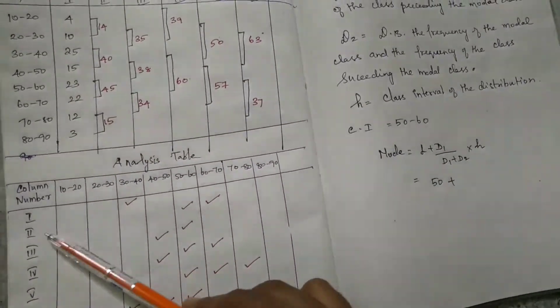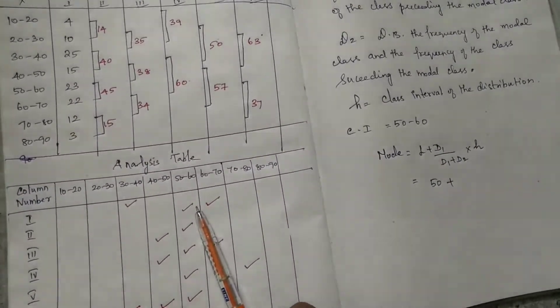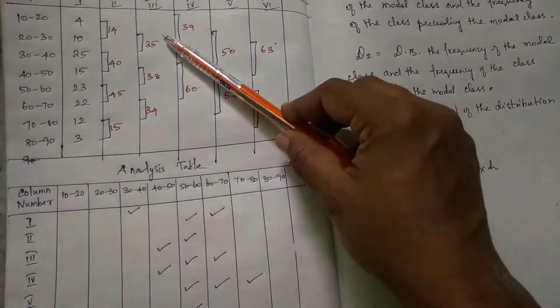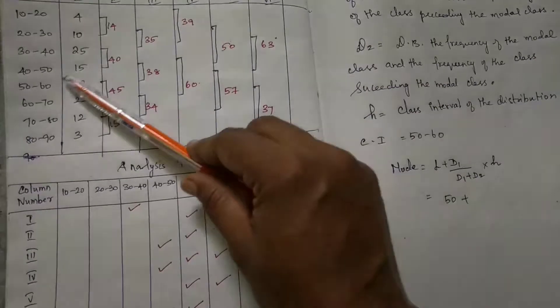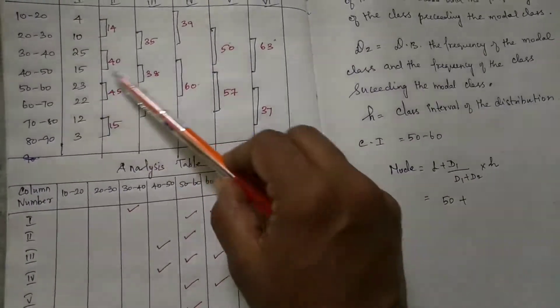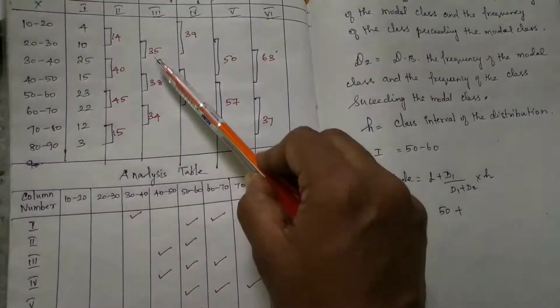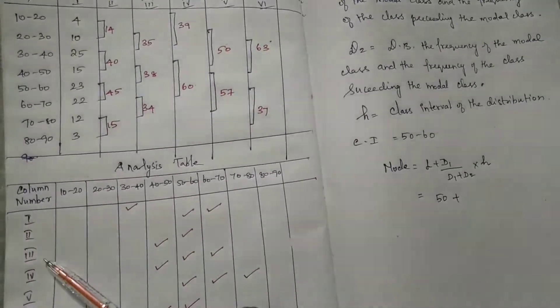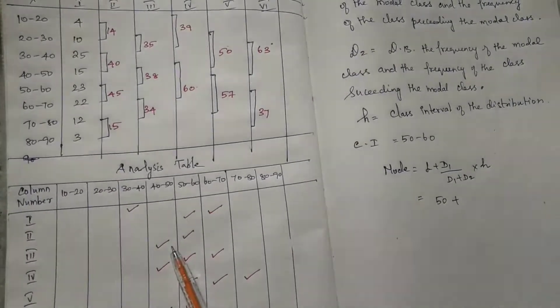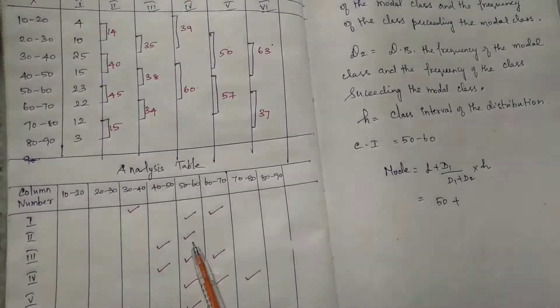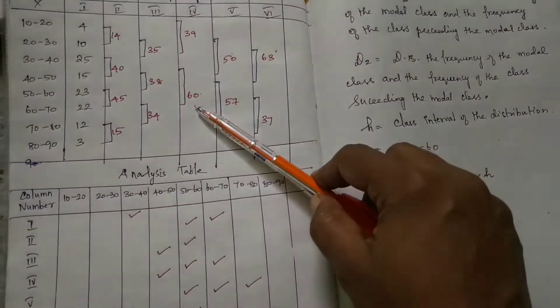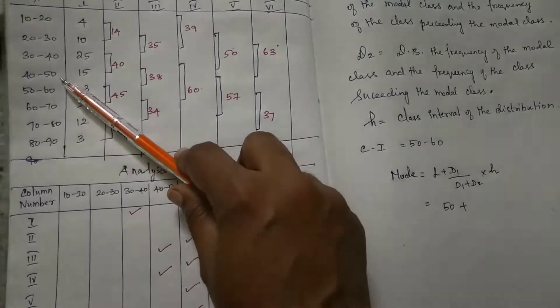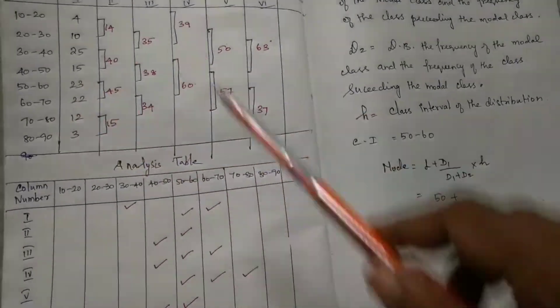Column 2: 50 to 60, 60 to 70. Column 3 has highest frequency 38 - add 40 to 50, 50 to 60, 60 to 70. Column 3 values are 40 to 50, 50 to 60. Next, column 4. Column 4 has highest frequency 60. Values are 40 to 50, 50 to 60, 60 to 70. We tick these.